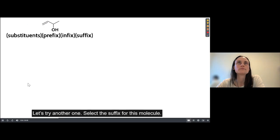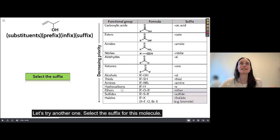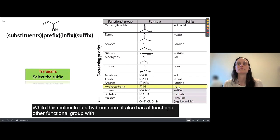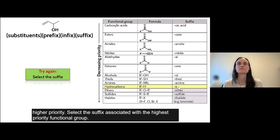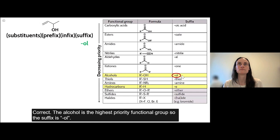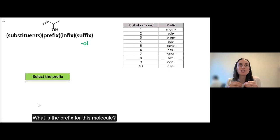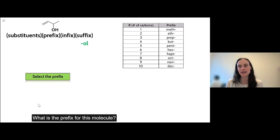The video asks students to select the suffix for a molecule — they're given a chart and need to select the correct suffix. It's built on invisible hotspots. If a student selects incorrectly, they receive feedback on why their answer was wrong and are asked to try again. When correct, the video confirms the alcohol is the highest priority functional group and the suffix is OL. The video continues taking students through step by step each piece of naming a molecule, asking them to do each step rather than just telling them the answer, with feedback and scaffolding as they need it.